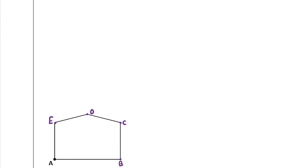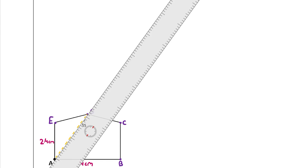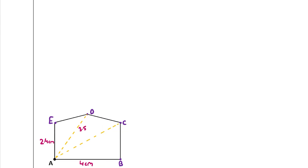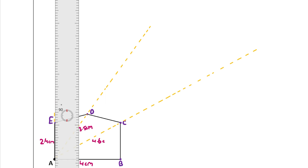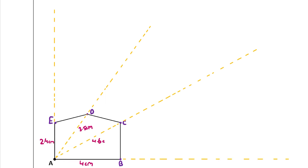Using a ruler, measure the distance from A to each point. The distance from A to B is roughly 4 centimeters, A to E is roughly 2.4 centimeters, A to D is roughly 3.5 centimeters, and A to C is roughly 4.6 centimeters. Now extend each of the lines from A through B, C, D, and E outward to accommodate the enlarged distances.